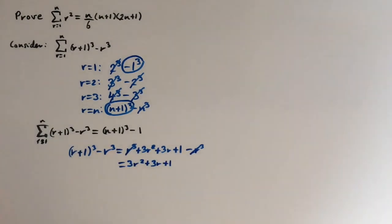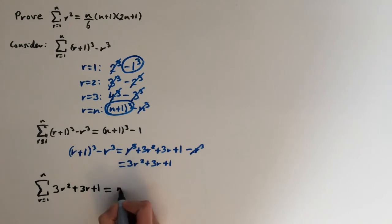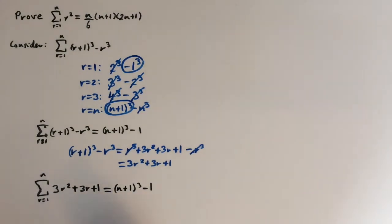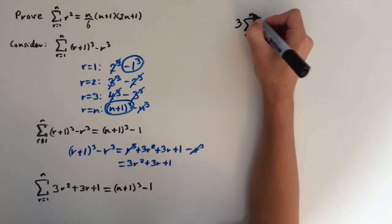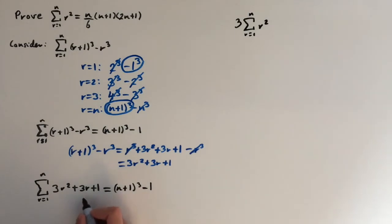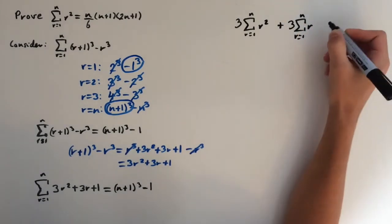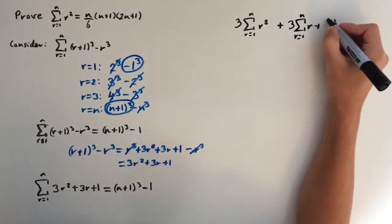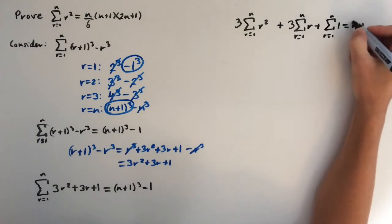Let's substitute this back into the series. We set the sum from r equals 1 to n of 3r squared plus 3r plus 1 equal to n plus 1 cubed minus 1. Now I'm going to split up these terms and express them as different series: 3 times sigma r equals 1 to n of r squared, plus 3 times sigma r equals 1 to n of r, plus sigma r equals 1 to n of 1, equals n plus 1 cubed minus 1.